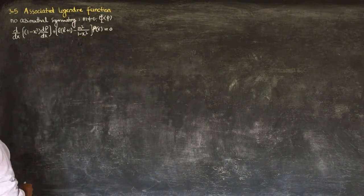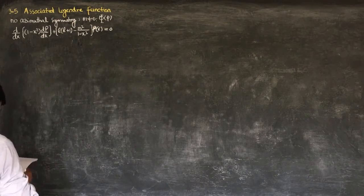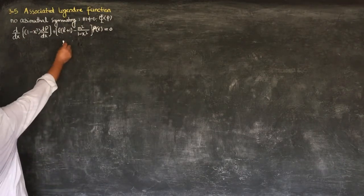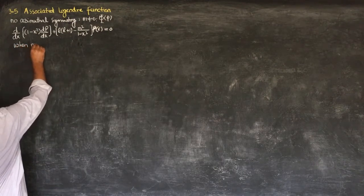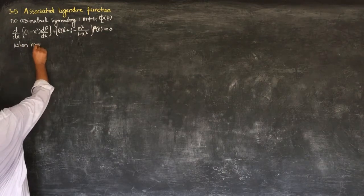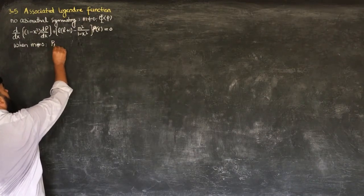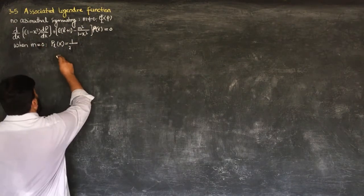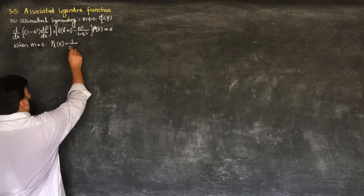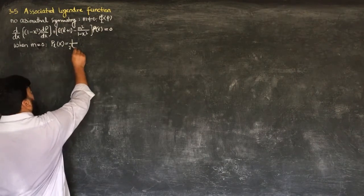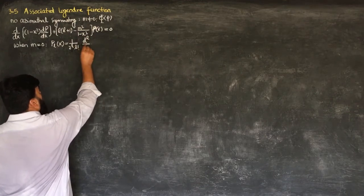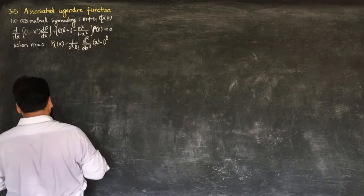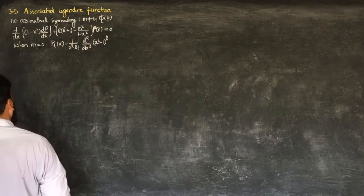When M is non-zero we have the phi dependence of the potential as well, and we need to solve this differential equation. When M was equal to zero, we wrote the solution in terms of the Legendre polynomials using the Rodrigues formula: P_L(x) = 1/(2^L · L!) · d^L/dx^L (x² - 1)^L.